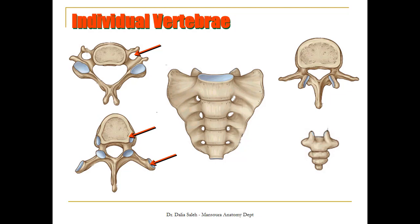In the lumbar region, the lumbar vertebrae are characterized by the big kidney-shaped body. Then we have the sacrum, a mass of bone formed of five fused vertebrae. And very small compared to it is the coccyx.